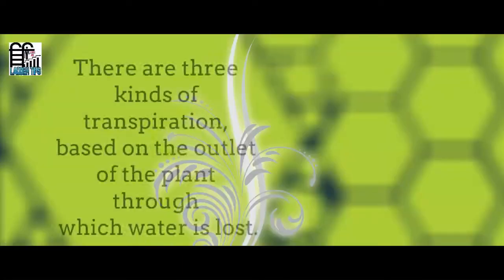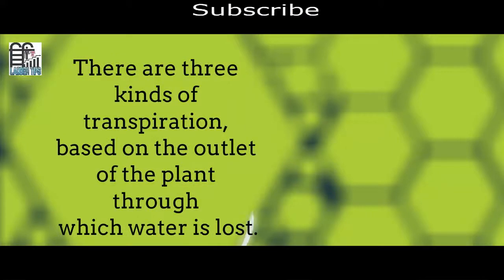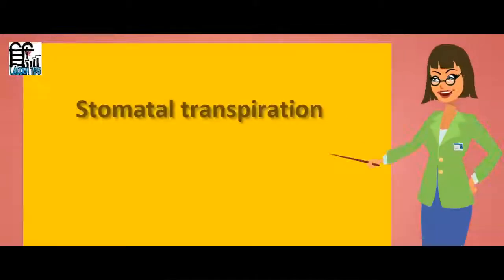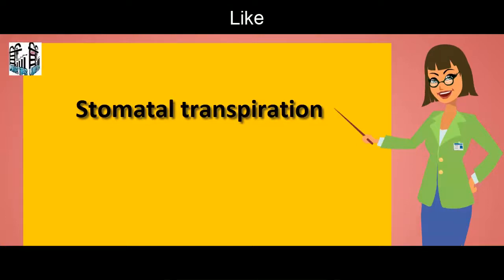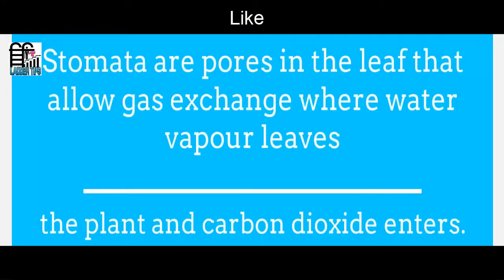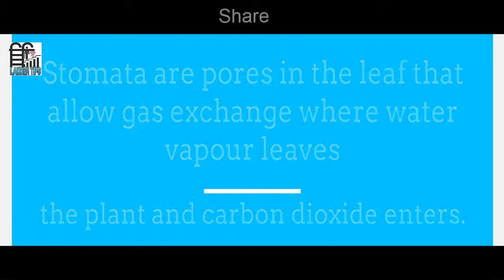There are three kinds of transpiration based on the outlet of the plant through which water is lost. Stomatal transpiration. Stomata are pores in the leaf that allow gas exchange where water vapor leaves the plant and carbon dioxide enters.